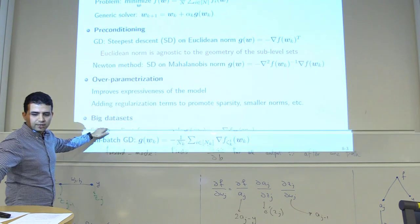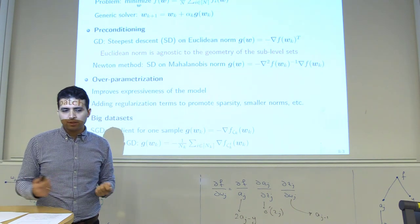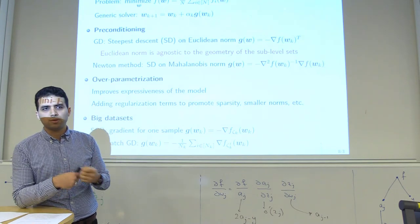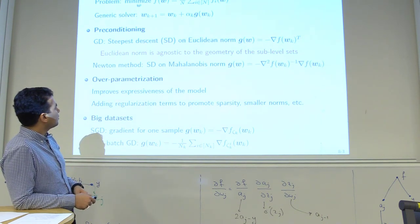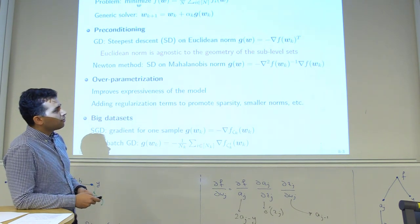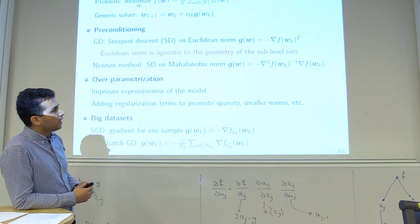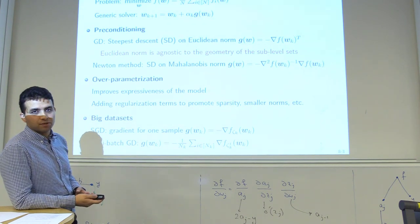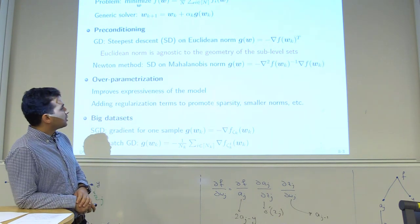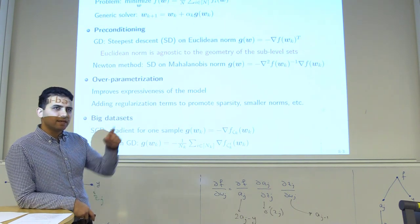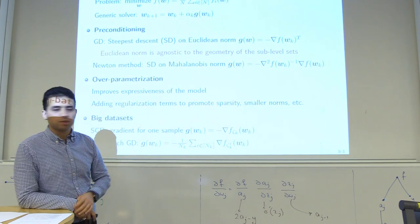Gradient descent is essentially preconditioning with the Euclidean norm, treating all dimensions equally. You can define other norms to recover Newton's method, where you precondition with the Hessian matrix locally around the current point. This gives a much better condition number — L divided by mu becomes much smaller. The problem is computing and inverting the Hessian, which may not be feasible when the parameter size is very large.